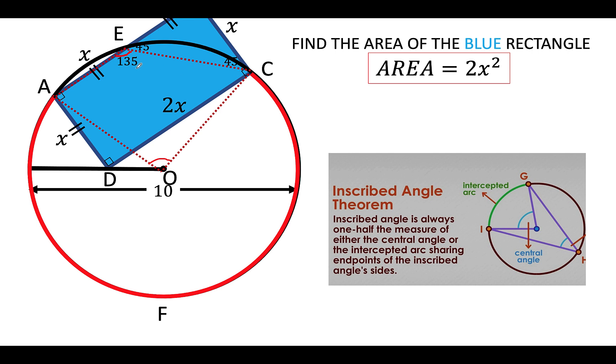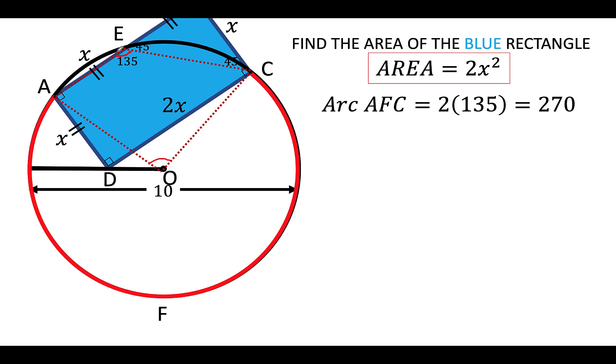is twice 135 degrees or 270 degrees. Which means that the measure of minor arc AEC must be 360 degrees minus this 270, which is equal to 90 degrees. So 270 plus 90 gives us 360 degrees, which is the measure around the circle.